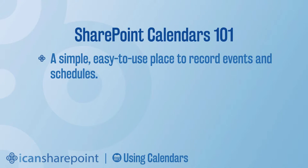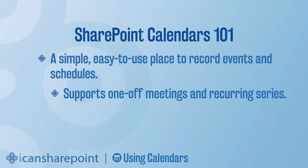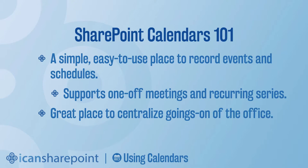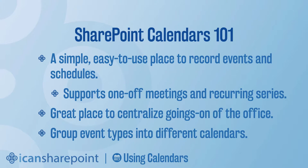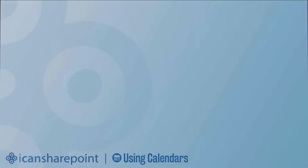SharePoint calendars are a really good place to record events and schedules. They support one-off meetings — a one-time deal — but also recurring series. You can even pull out individual meetings from a series, like on a holiday. It's a great place to centralize the goings-on of the office so everybody knows to go look at the calendar to find out what's going on and make sure there are no conflicting events. You can also group different types of events on different calendars — luncheons in one, meetings in another — to add some diversity in how you keep track of everything.